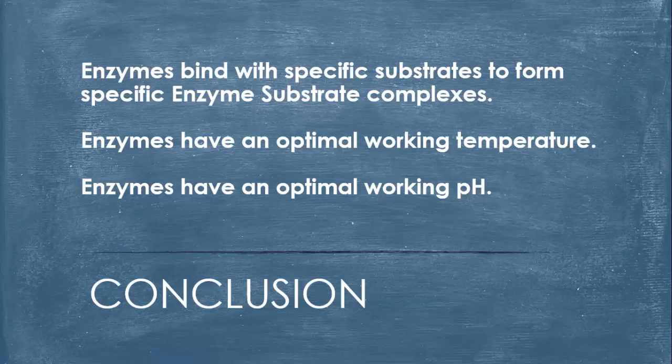So overall, enzymes bind with specific substrates to form specific enzyme substrate complexes, the ESCs. Enzymes have an optimal working temperature; we found that amylase temperature was about 37 degrees Celsius. And enzymes have an optimal working pH, which we found with amylase was about 6.7. So considering all this, reflect upon how enzymes work and how specific environments are conducive to working with specific enzymes.